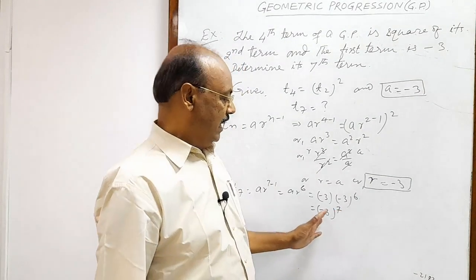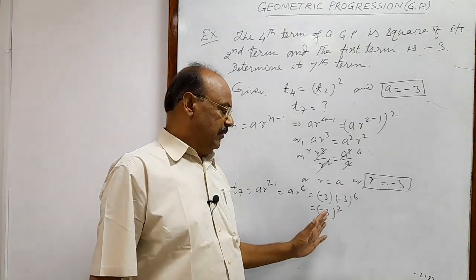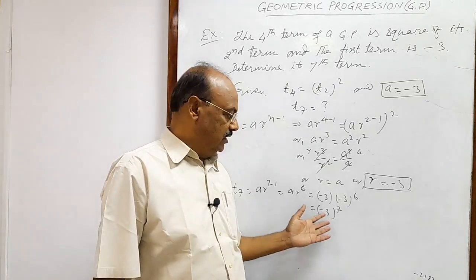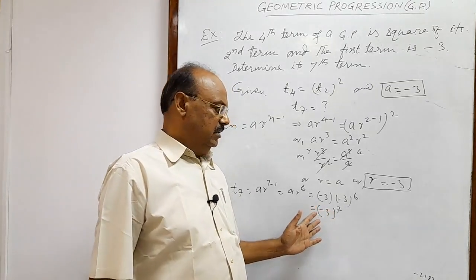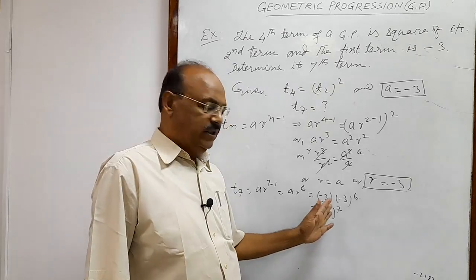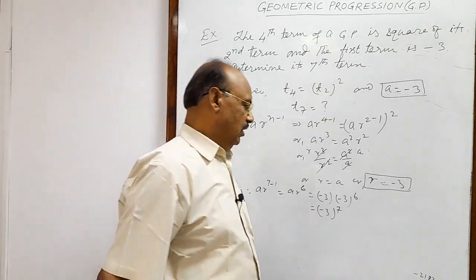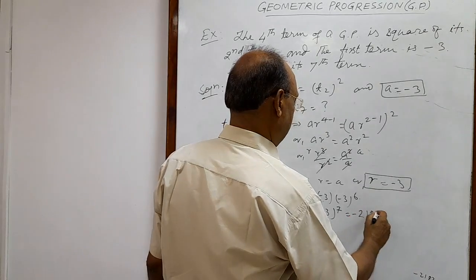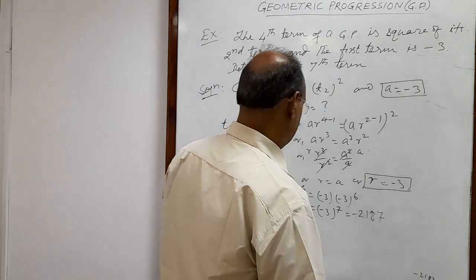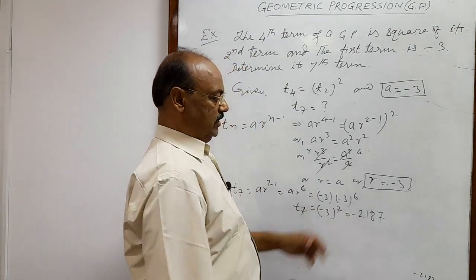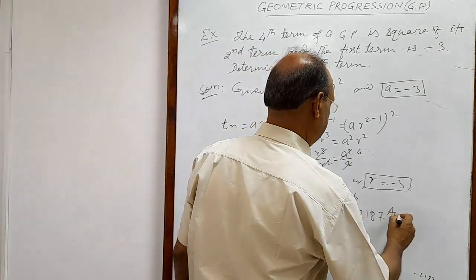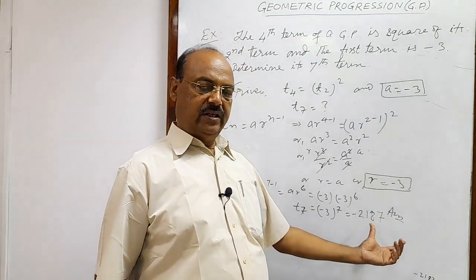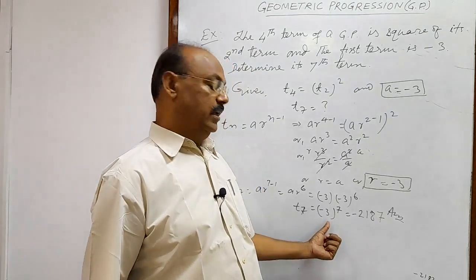Now simply we have to calculate it. We have to multiply minus 3 how many times? 7 times. And you will see that when you do this multiplication, this will be equal to minus 2,187. So this is the seventh term, this is the required answer.